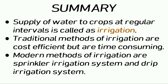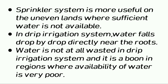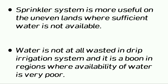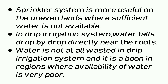To summarize: supply of water to crops at regular intervals is called irrigation. Traditional methods of irrigation are cost efficient but time consuming. Modern methods of irrigation are the sprinkler irrigation system and the drip irrigation system. The sprinkler system is more useful on uneven lands where sufficient water is not available. In the drip irrigation system, water falls drop by drop directly near the roots and is not at all wasted, making it a boon in regions where water availability is very poor.